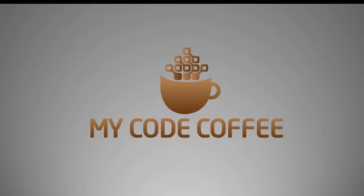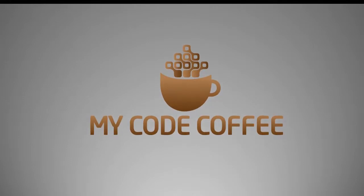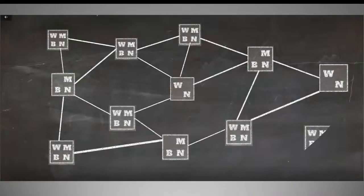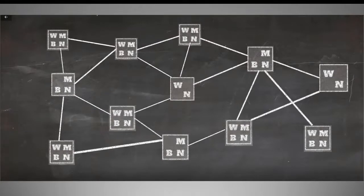Hello and welcome to MyCodeCoffee. In the previous chapter, I explained how a node connects to the Bitcoin network to become part of this peer-to-peer network. Once a node becomes part of the network, it can perform one or more functions depending on which type of node it is.